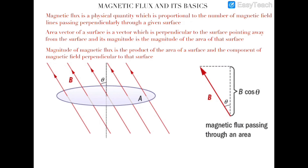Hello guys, today in this video we will start electromagnetic induction. The very first topic of this chapter is magnetic flux, which is a very important factor in electromagnetic induction. Magnetic flux is a physical quantity which is proportional to the number of magnetic field lines passing perpendicularly through a given surface.